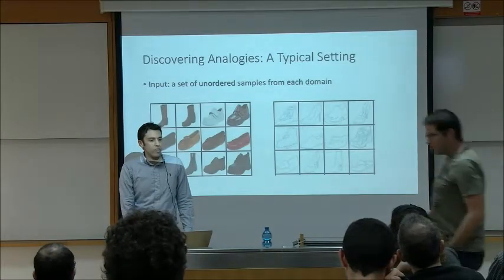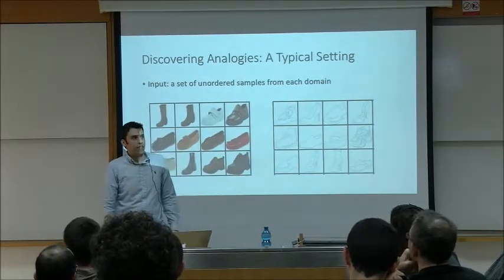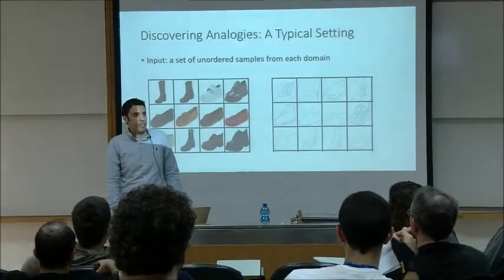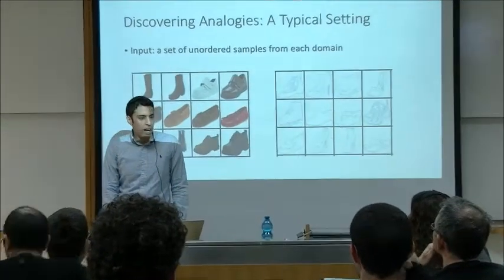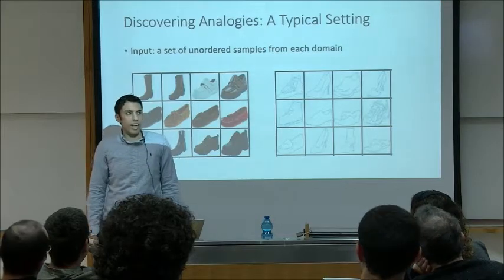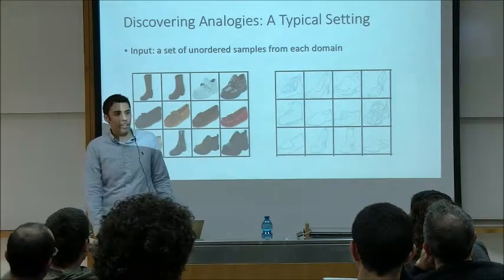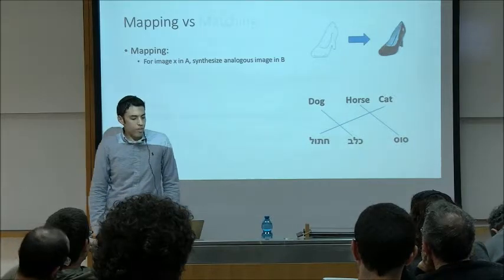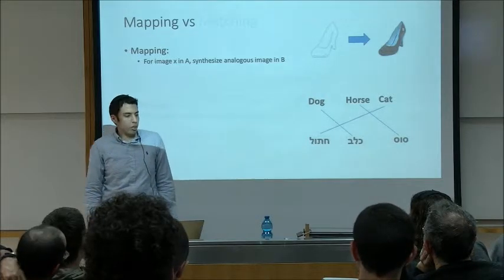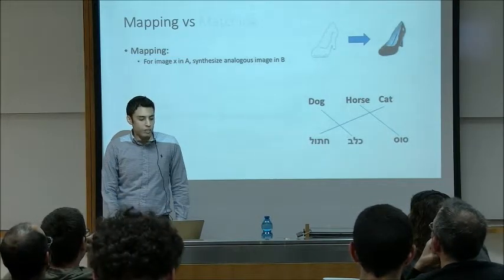The objective of this talk is to allow computers to make unsupervised analogies. The combinational setting we deal with has two unordered sets of data — for example, one set has images of shoes and the other has edge maps of shoes. We don't have any correspondences between the two, so this is an unsupervised setting. The first task is unsupervised mapping: for every image in one domain, we want to synthesize another image in the other domain that preserves its semantic content.